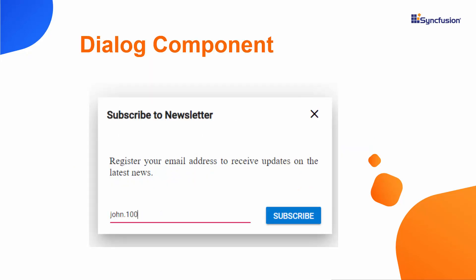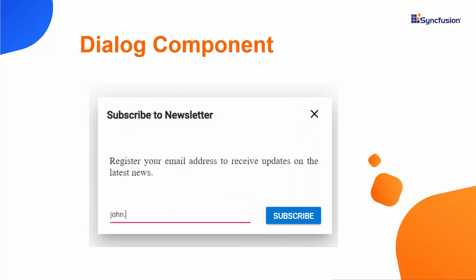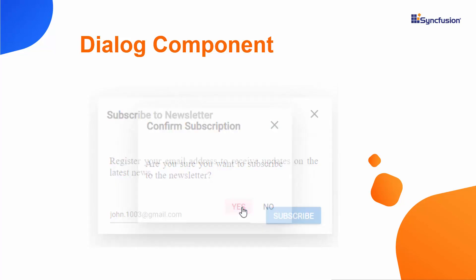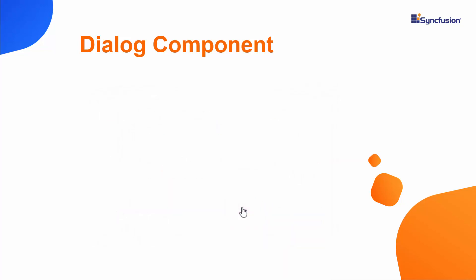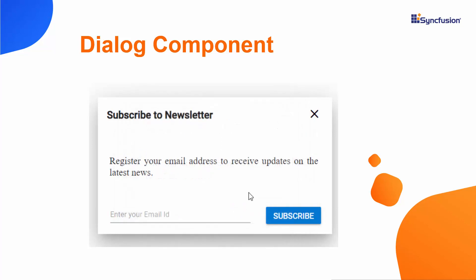Look at this example where you can see a subscription dialog with a confirmation dialog. In the dialog, I enter an email address and click the subscribe button. The confirmation dialog is displayed with the buttons yes and no. When the yes button is clicked, the subscribe and confirmation dialogs close. If I click the no button, the textbox value resets and the confirmation dialog alone closes.